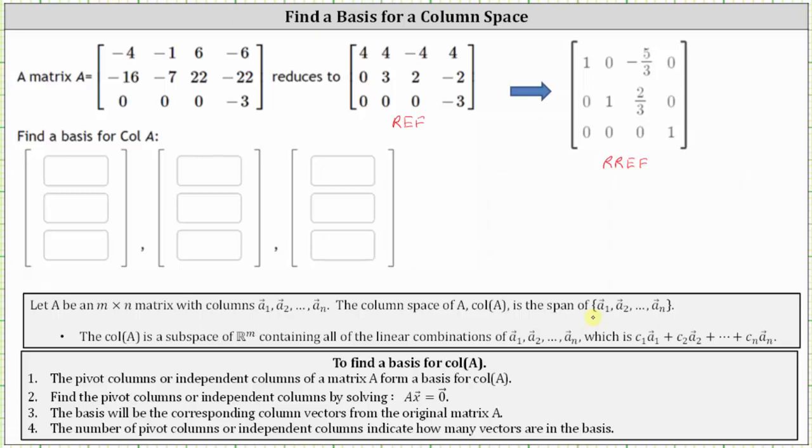The column space is a subspace of R^m, or in our case R^3, containing all the linear combinations of the vectors a sub one through a sub four. We know the column space is a subspace of R^3 because each column has a vector containing three components.